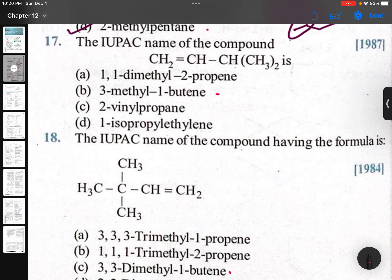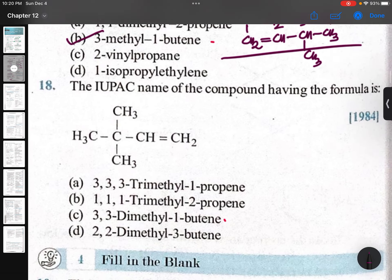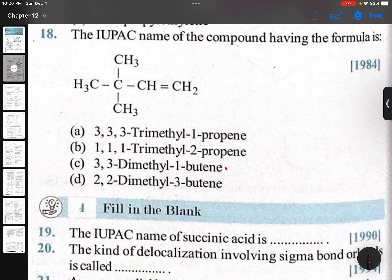IUPAC name of the compound CH2=CH-CH-CH-CH3. One, two, three, four: 3-methyl-but-1-ene. Right, like this it will be easy. IUPAC name of the compound having the formula: one, two, three - 3,3-dimethyl-1-butene.